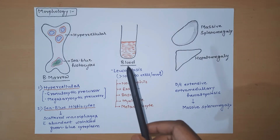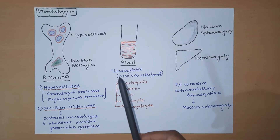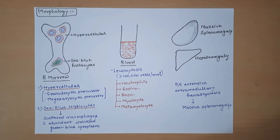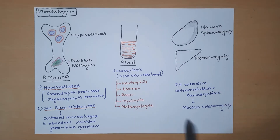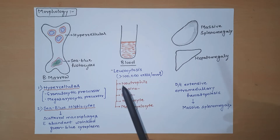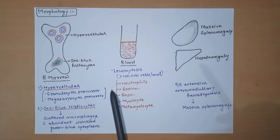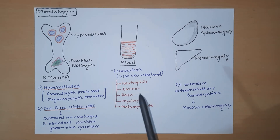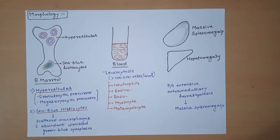On blood examination, we see leukocytosis in patients of CML — the WBC count is increased, exceeding more than 100,000 cells per cubic millimeter. Cells such as neutrophils, eosinophils, basophils, myelocytes, and metamyelocytes are mainly increased. This is because there is excessive proliferation of granulocytic precursors; as granulocytic precursors increase, granulocytes — neutrophils, eosinophils, basophils — and their precursors like myelocytes and metamyelocytes also increase.